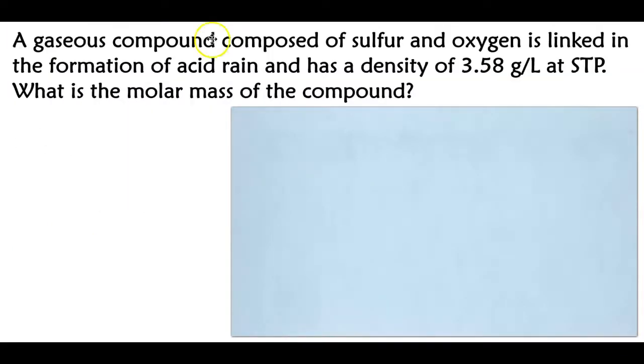Another example: a gaseous compound composed of sulfur and oxygen is linked in the formation of acid rain and has a density of 3.58 grams per liter at STP.